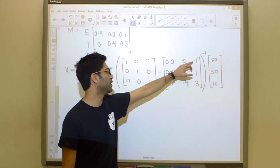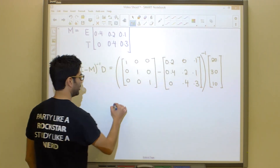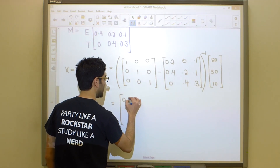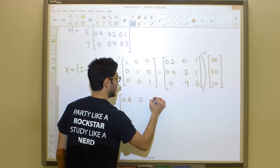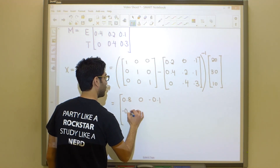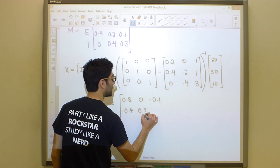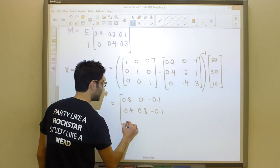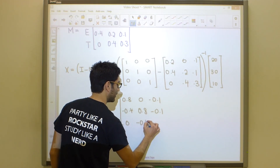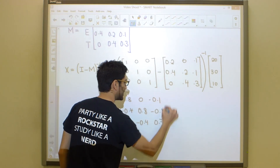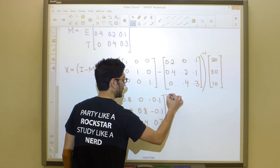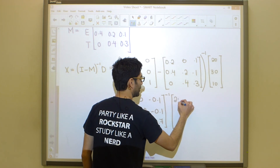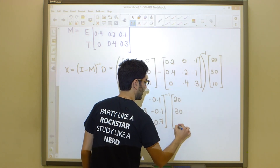Subtracting corresponding entries gives us I minus M: 1 minus 0.2 is 0.8, 0 minus 0 is 0, 0 minus 0.1 is negative 0.1; then negative 0.4, 0.8, negative 0.1; then 0, negative 0.4, and 0.7. So we now have the matrix (I minus M). We must take the inverse of this and then multiply it by our demand vector of 20, 30, and 10.